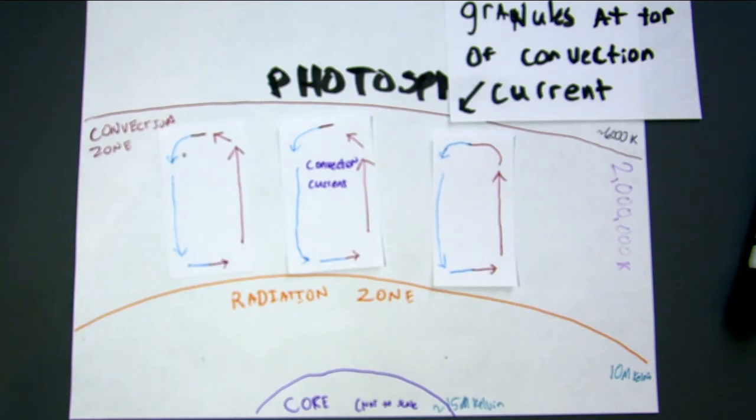So that's the convection zone. Heat transferred by convection currents makes granules on the photosphere and around 2 million Kelvin.